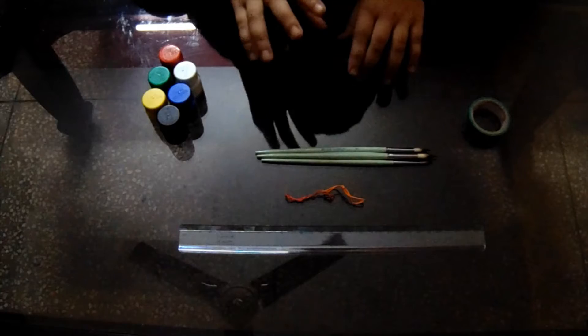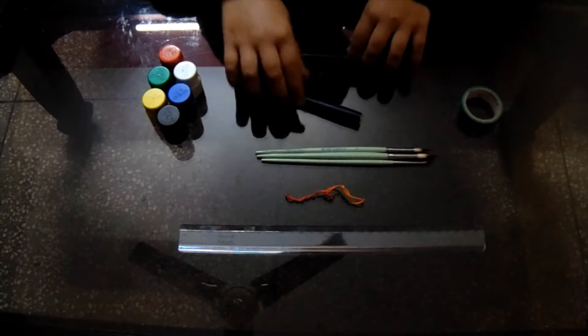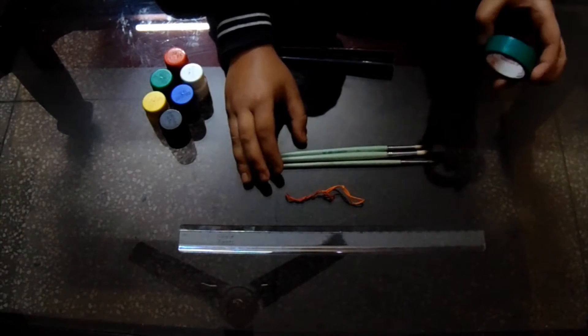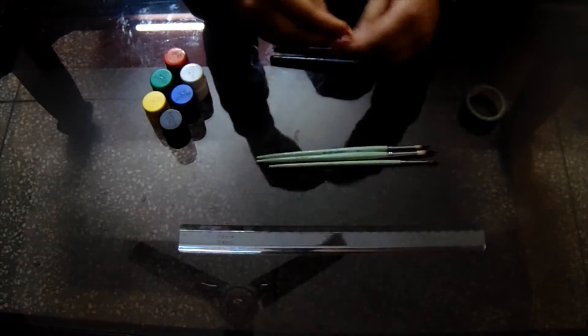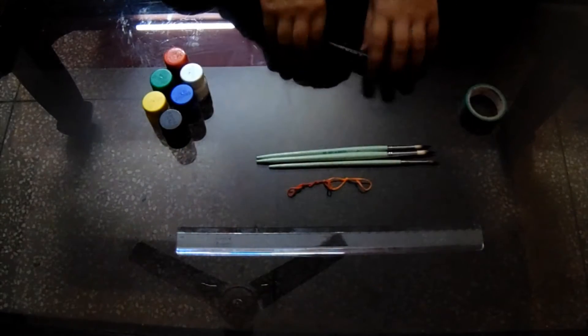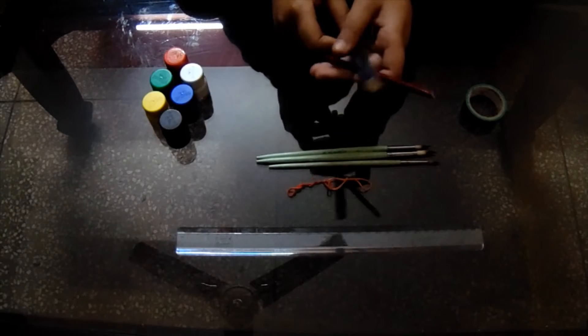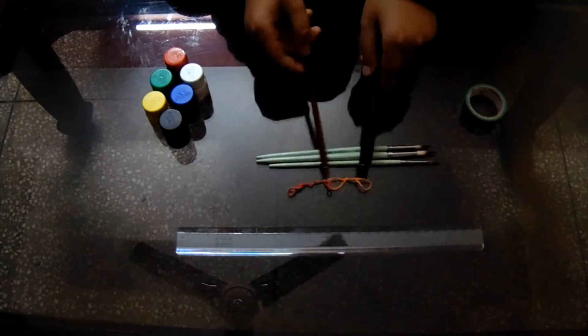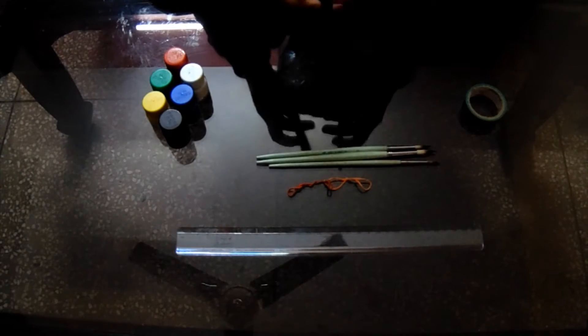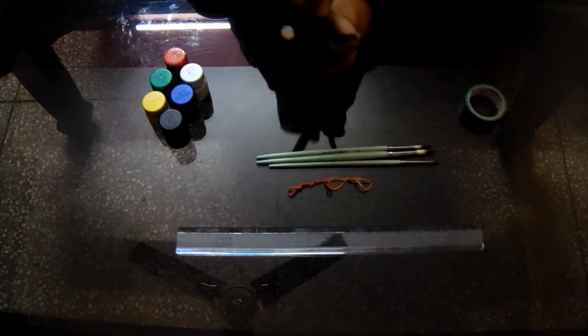First, the things which we need are some colors, paintbrush, cello tape, rubber band, and a ruler. The main thing is the best pieces of pen, paintbrush, or anything else which should be made out of wood or anything else which is hard like this, so that it can stand and take the pressure.